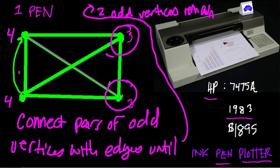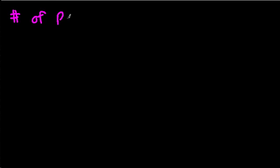If we wanted to create a circuit, we would have to keep connecting pairs of odd vertices with these imaginary lines where the pen's lifting up, until we have no odd vertices left. So the question is: how many pairs will we have to connect in order for this to actually work? When we had four odd vertices, it took one line to get rid of our odd pair. So instead of looking at the number of odd vertices, let's look at the number of pairs of odd vertices.